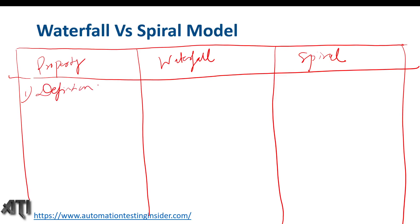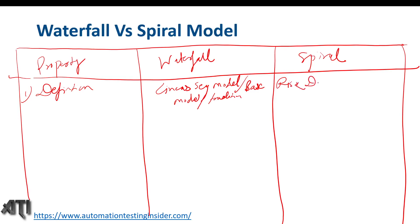The first property is the definition. The waterfall model is a linear sequential model, also called the base model or traditional model. The spiral model is a risk-driven model. I'm writing some references here since I can't always repeat the notes verbally.